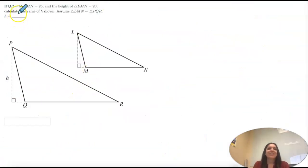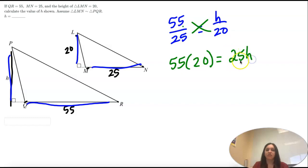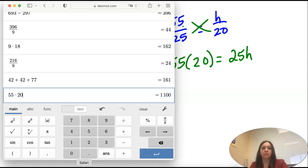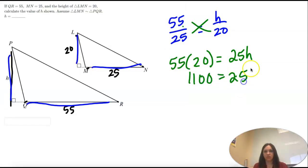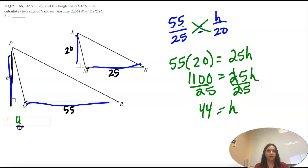If QR is 55 and MN is 25 and the height of MN is 20. Calculate the value of H. So this is just similar triangles. So we're going to line up our sides. So 55 goes with 25. And then H goes with 20. Simple. Cross multiply. So 55 times 20. 25 times H. And you would type in that answer.